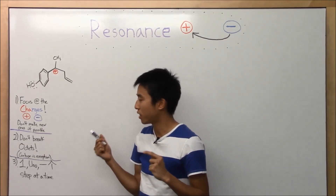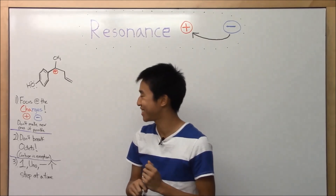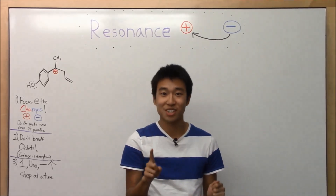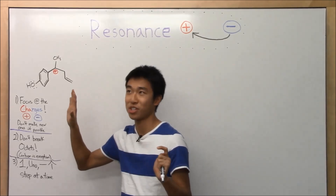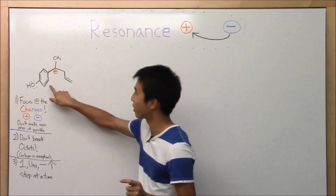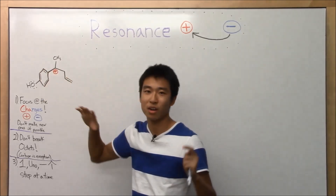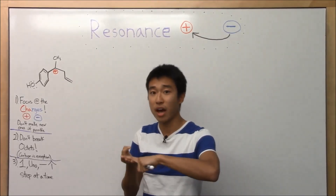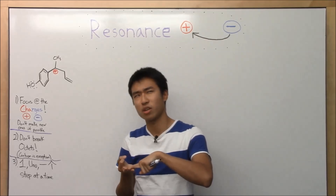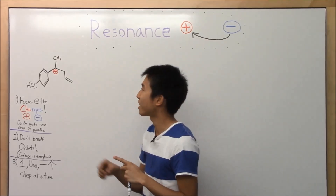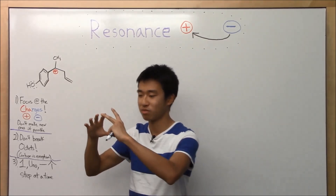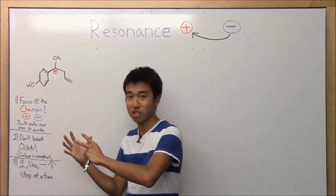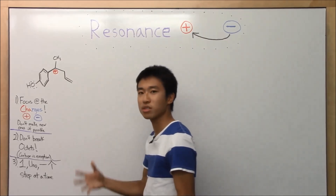And for Pete's sake, I don't know how many times I could say this to my students: one — uno, one step at a time. You have no idea how much harder you're making your life if you move like three arrows all on one resonance structure. By moving three arrows, you just missed out on two resonance structures that could have been points on a test. So only move one arrow at a time. Move one arrow — there's a point on the test. Move the next arrow — there's your next resonance structure. It'll make more sense once I go into it.